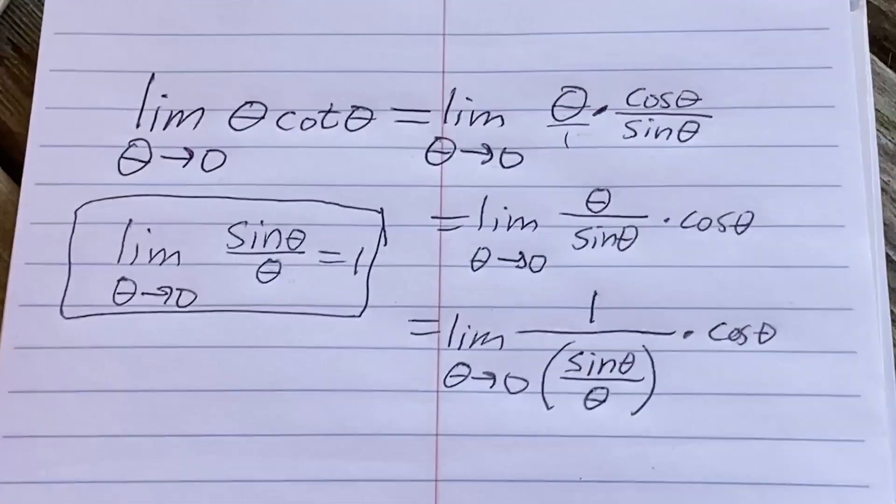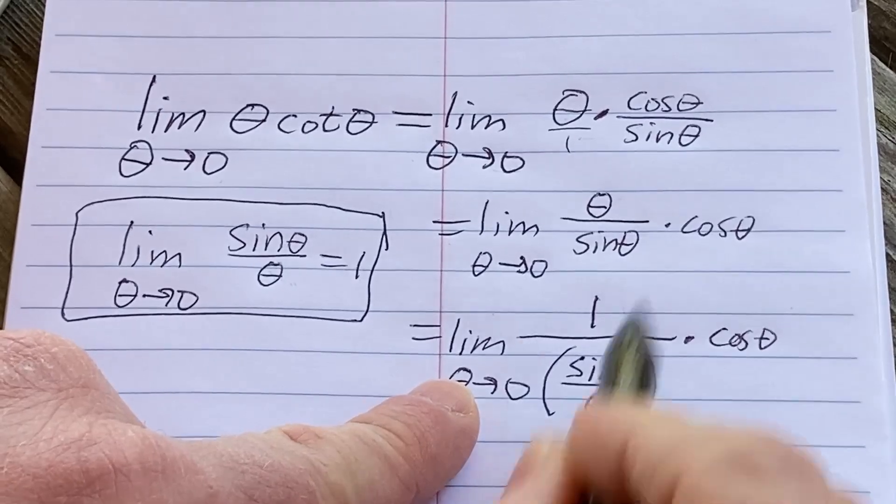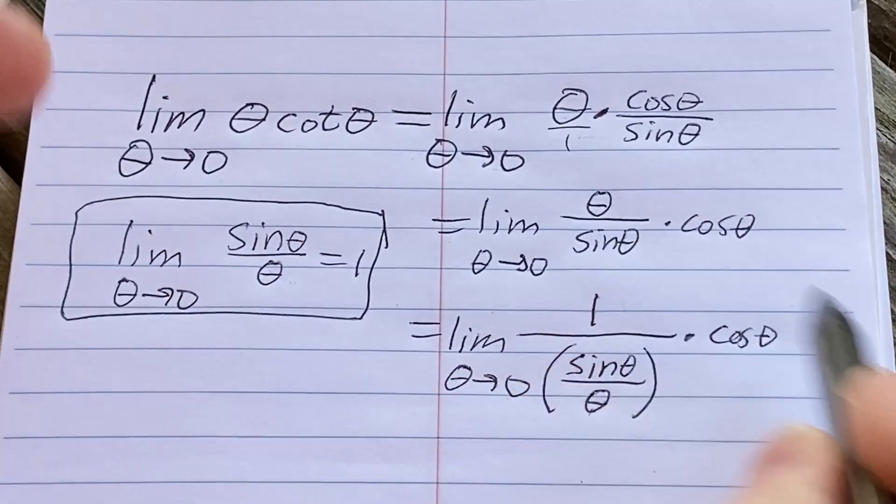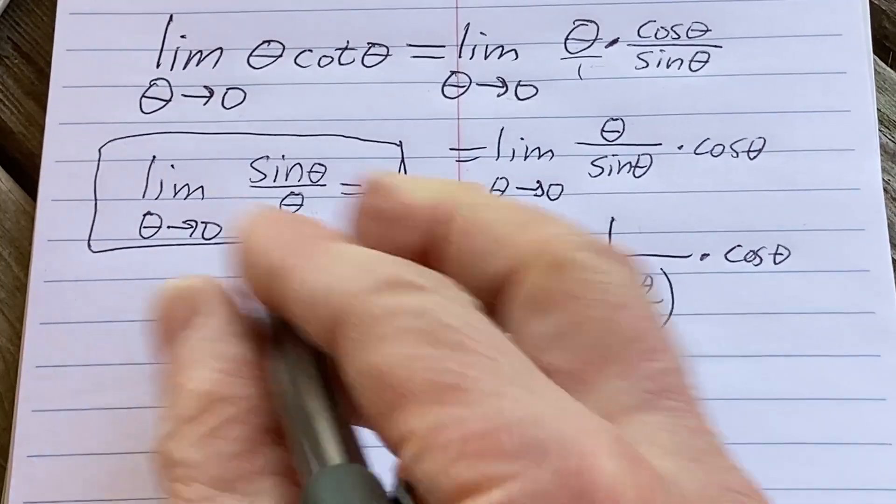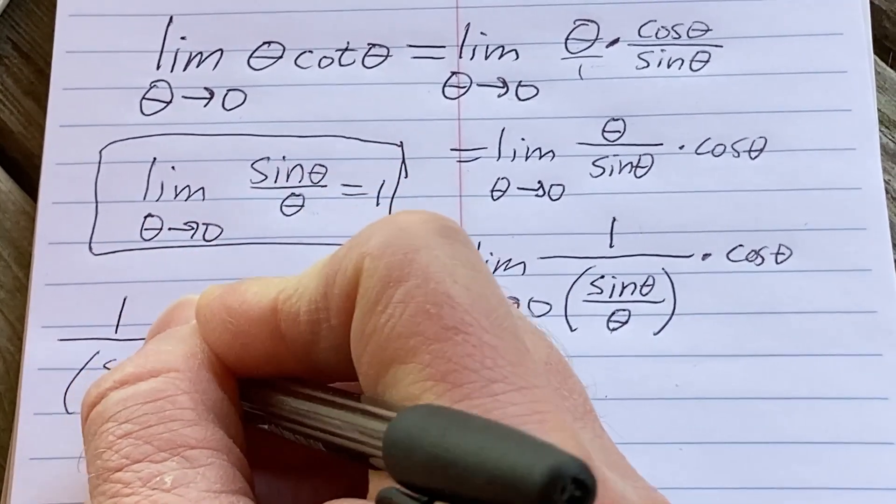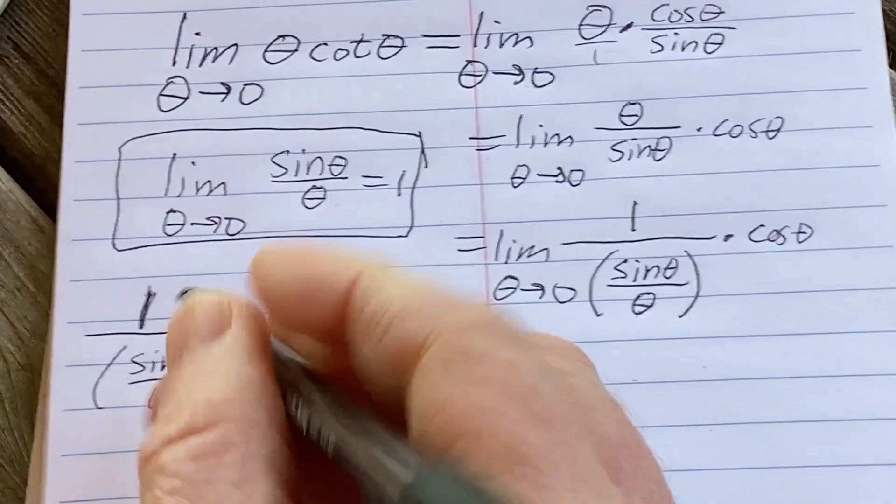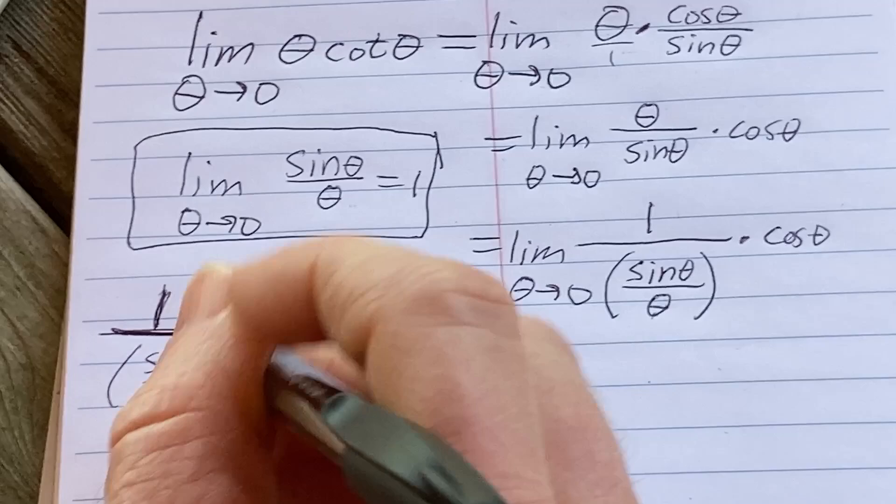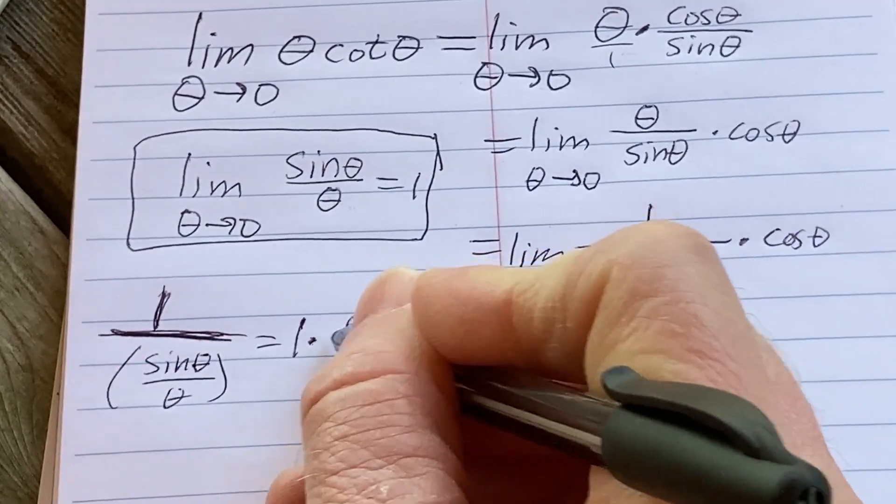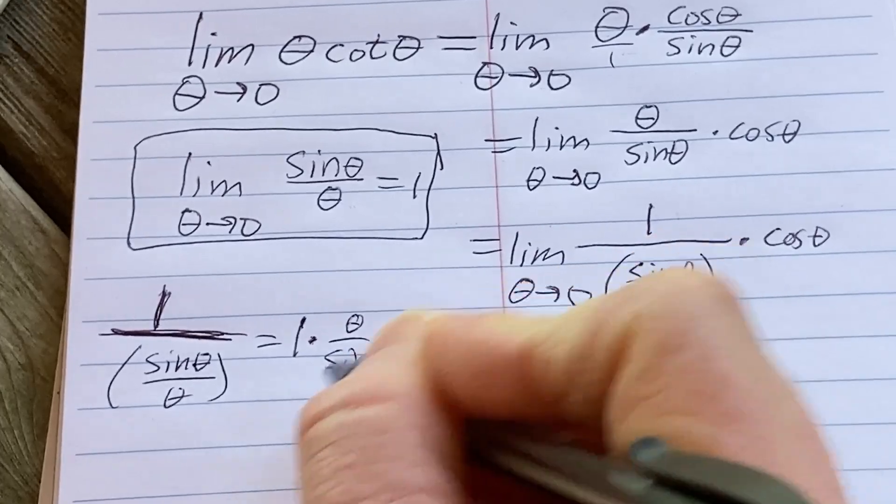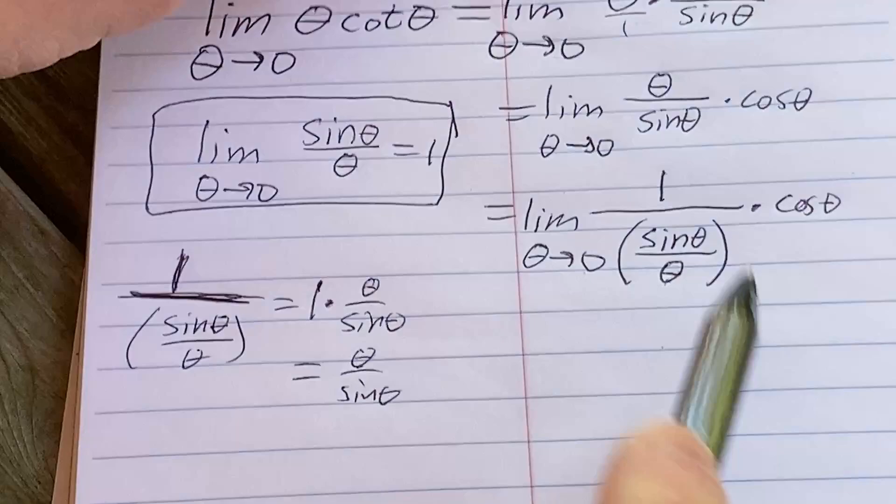Now watch this, this is equal to the limit as theta approaches zero. I want to get this so I'm going to write it like this: one over sine theta over theta, times cosine theta. Pretty cool right, that's because one divided by this is one times the reciprocal. And what is the reciprocal of this? Well it's this times one, you just get that. So boom, super simple right.